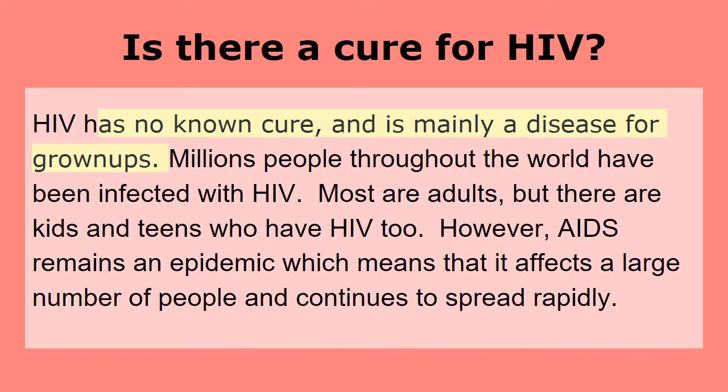Is there a cure for HIV, you may ask? HIV has no known cure and is mainly a disease for grown-ups. Millions of people throughout the world have been affected by HIV. Most are adults, but there are kids and teens who have HIV too. AIDS remains an epidemic, which means that it affects a large number of people and continues to spread rapidly.